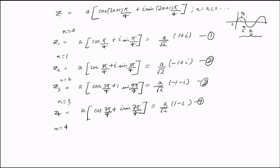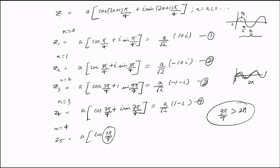For n = 4, z₅ would involve cos(9π/4). However, since sines and cosines have a period of 2π, after every 2π the same values repeat. Since 9π/4 is greater than 2π, for all values n ≥ 4 we get the same repeated values. Therefore, there is no need to calculate beyond n = 3.